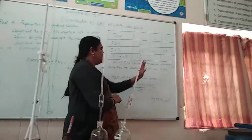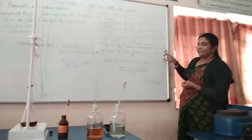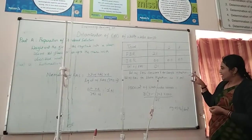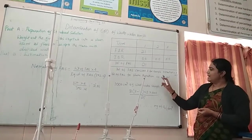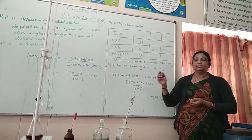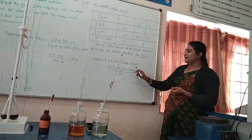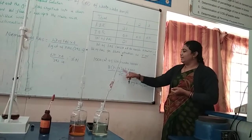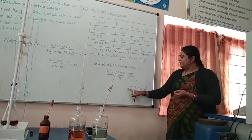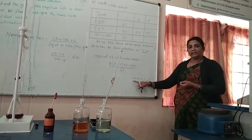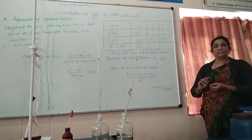After completing the 3 trials, take any one concordant trial value as X — you do not need to average all 3. Volume of FAS consumed for the sample titration is X ml, and the volume of FAS for blank titration is Y ml — this blank titration value will be given to you in exams; you do not have to perform it yourself. The COD formula is: (Y − X) × Z × 8 × 1000 / 25, giving you milligrams of oxygen per litre. This is the amount of oxygen required for oxidizing the organic and inorganic impurities present in the wastewater sample.